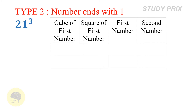Now let's come to Type 2 — numbers that end with 1. The problem is to find the cube of 21. The first number is 2 and the second number is 1. Fill in the table: first number 2, second number 1. In the second column write the square of the first number: square of 2 is 4. In the first column write the cube of the first number: cube of 2 is 8.